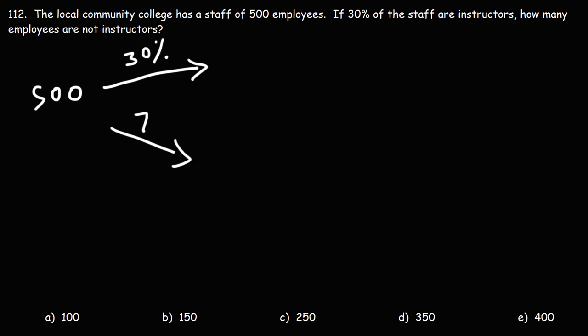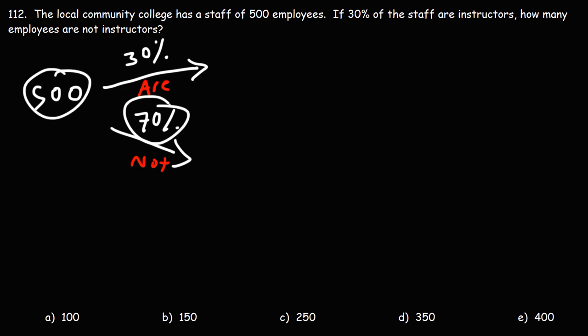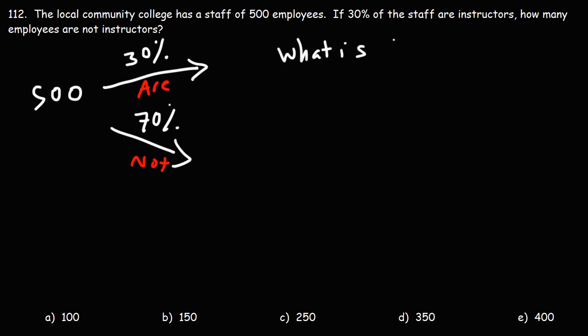That means that the other 70% are not instructors. Here they are instructors, and here they're not instructors. So we want to find out how many are not instructors. We've got to find out what 70% of 500 is. So we could think of this as: what is 70% of 500?